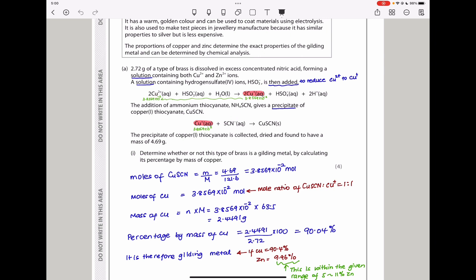Then I went back to my reaction. You can see this copper is the same copper here. In the thiocyanate reaction, we see a ratio of 1 to 1. And that means the moles of copper(I) is going to be the same 3.8569 times 10^-2. These moles are going to be the same because the mole ratio is 1 to 1.